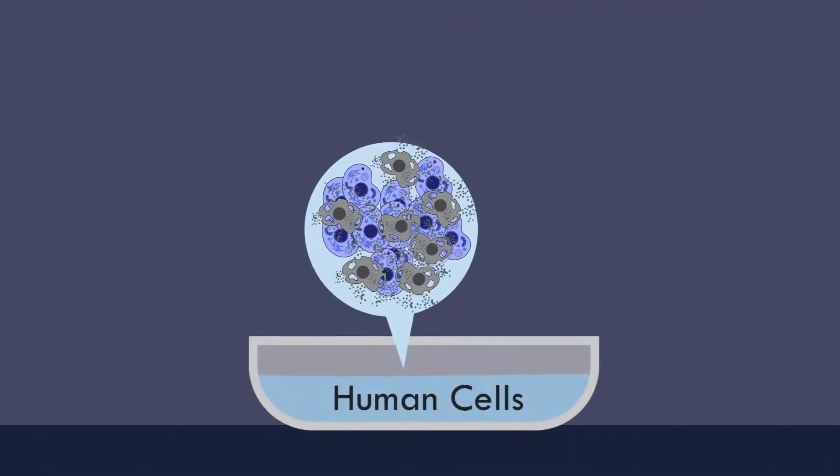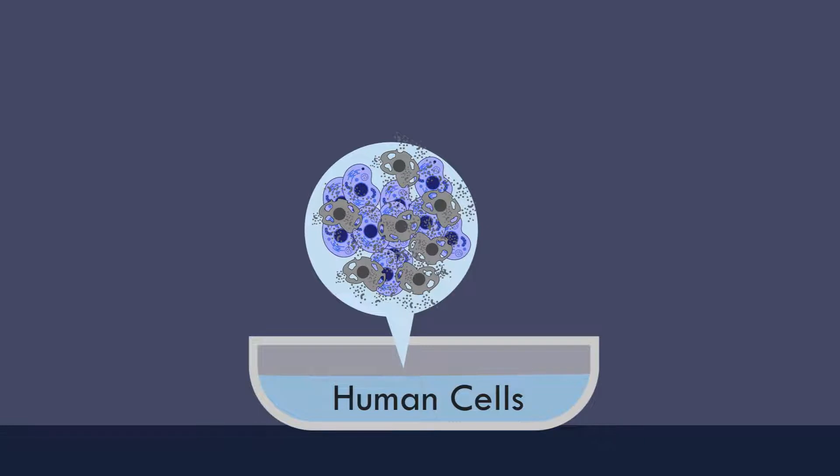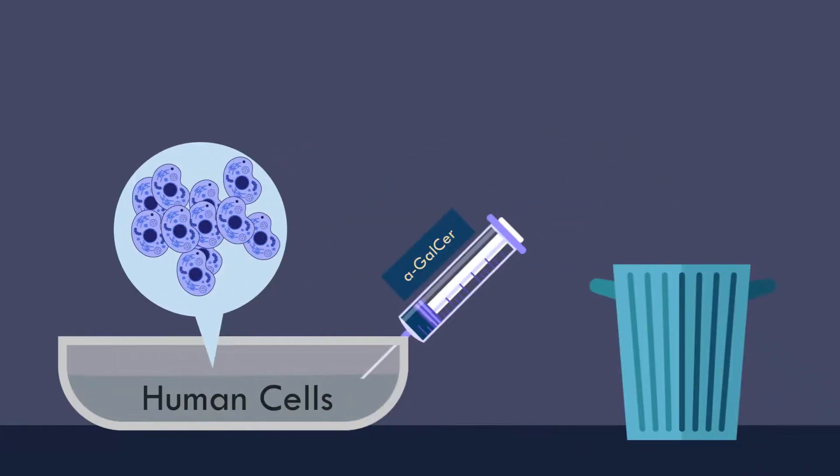A cytotoxicity assay using primary human cells showed that activated iNKT-cells can directly and preferentially kill senescent cells, while non-senescent cells were unaffected. This suggests that stimulation of iNKT-cells could be utilized in humans to clear accumulated senescent cells.